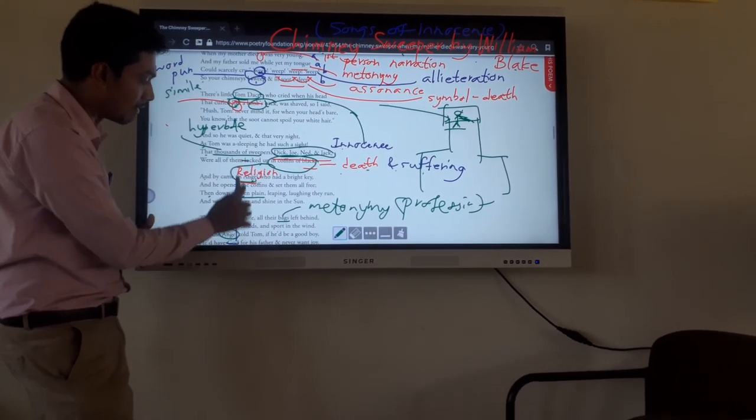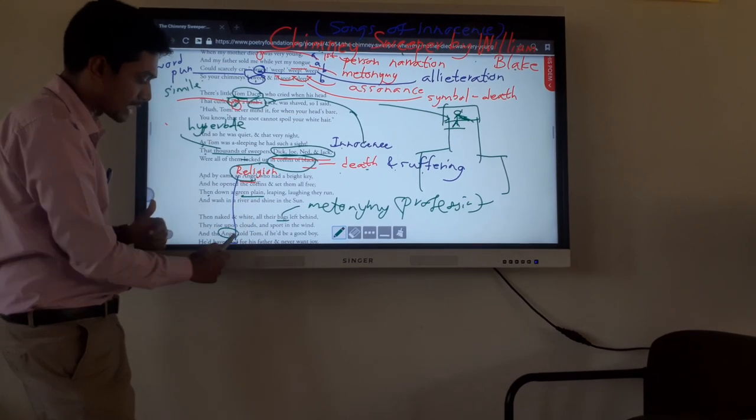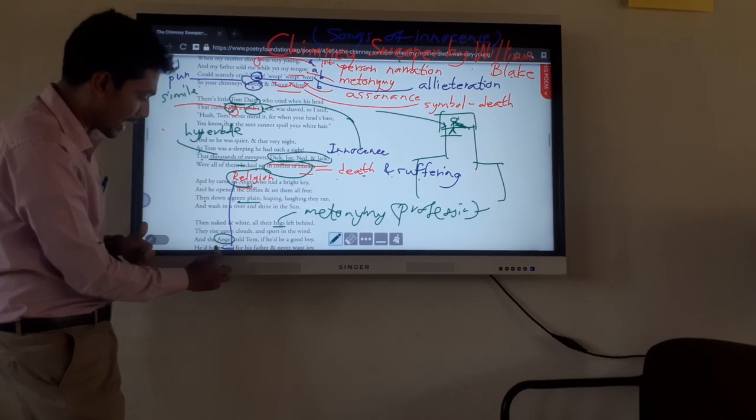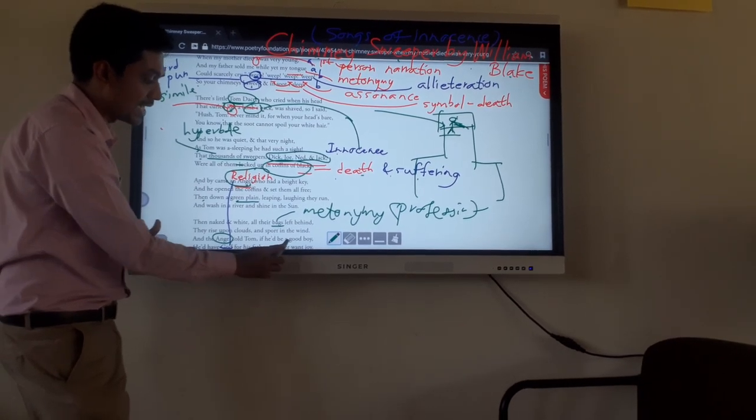And the angel - again the religious sentiments are brought out - told Tom, if he would be a good boy, he would have God for his father and never want joy.